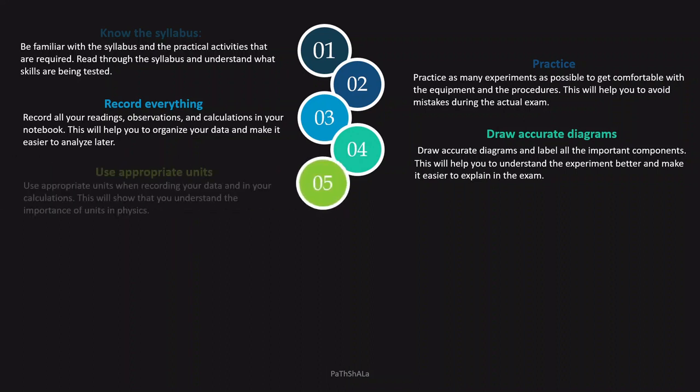Point number five: use appropriate units. Units play a very important role, especially in IGCSE Physics. So whenever you are recording your data, make sure you use the appropriate units. Even in your observation table, in the heading of the table, don't forget to mention the units.